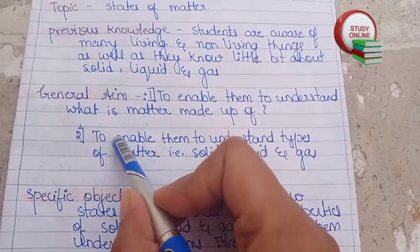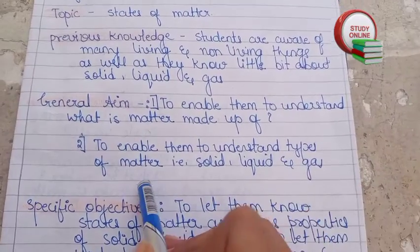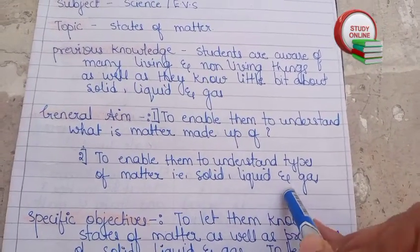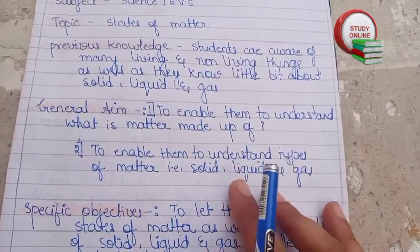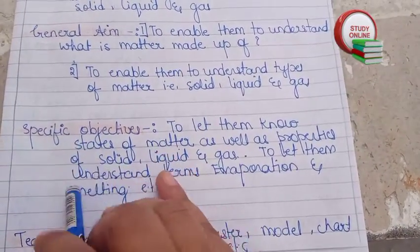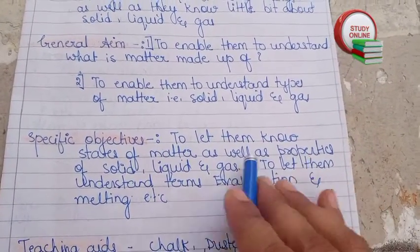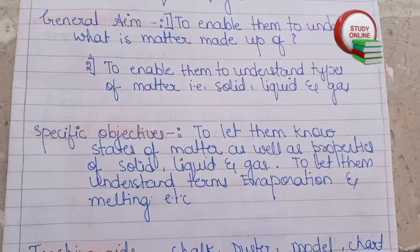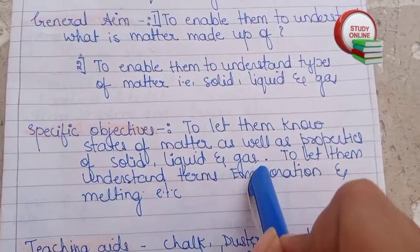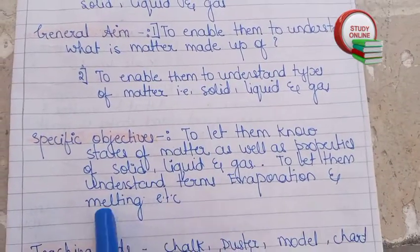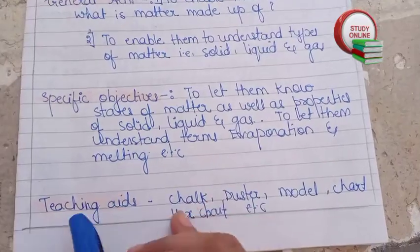The general objectives are to enable students to understand what matter is made up of, and to understand the types of matter — solid, liquid, and gas — as well as their properties. The specific objectives are to let them know the states of matter, the properties of solid, liquid, and gas, and to let them understand terms like evaporation and melting.